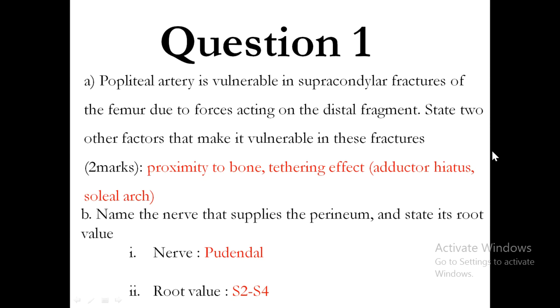Name the nerve that supplies the perineum and state its root value. The nerve of the perineum is the pudendal nerve, and the root value is S2, S3, and S4.